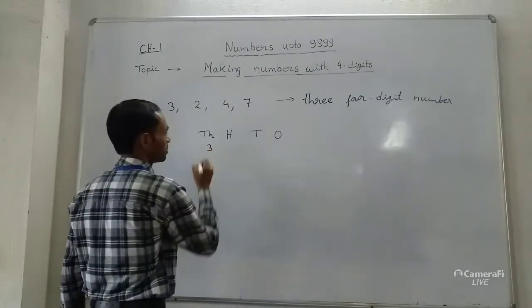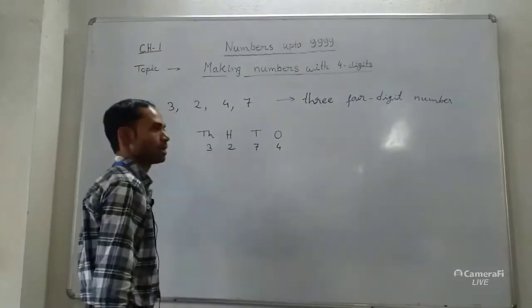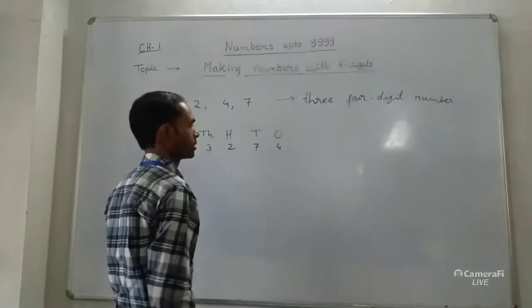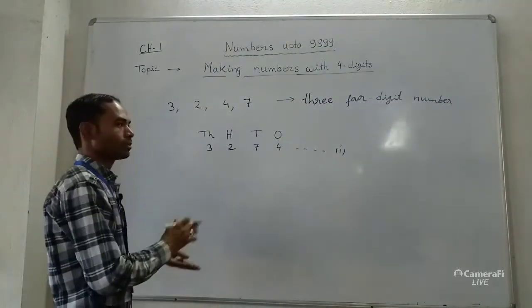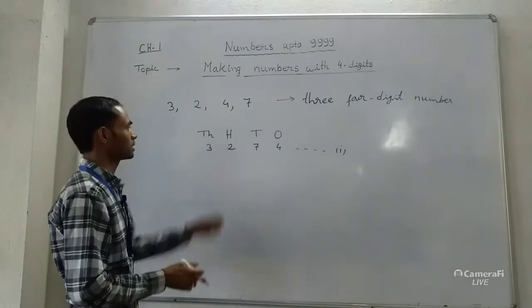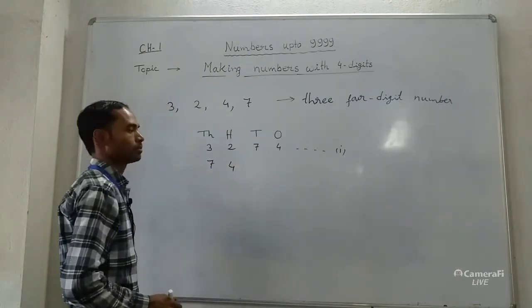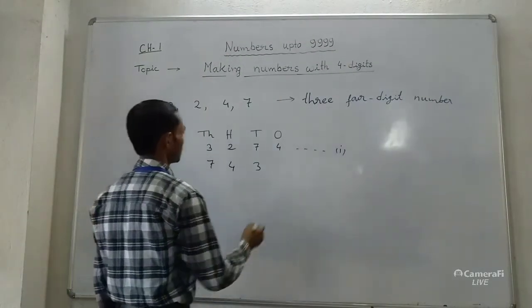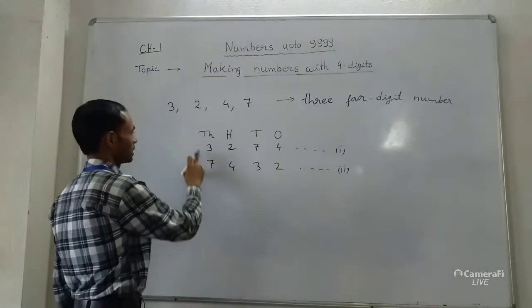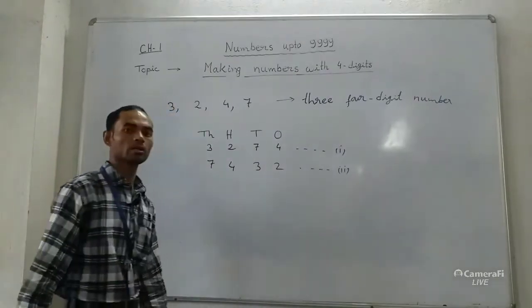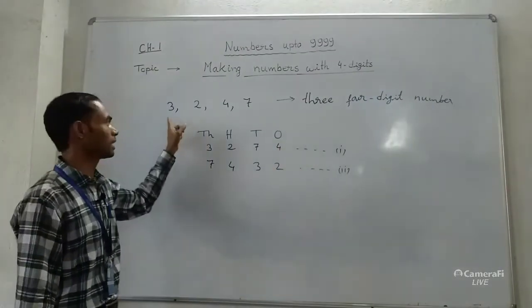Suppose we put 3 at the 1000s place, 2 at the 100s place, 7 at the 10s place, and 4 at the 1s place. Then we get the first number: 3274. Now, let us take another arrangement. Let us take 7 at the 1000s place, 4 at the 100s place, 3 at the 10s place, and 2 at the 1s place. Then we get the second number: 7432. We are not repeating any digit.